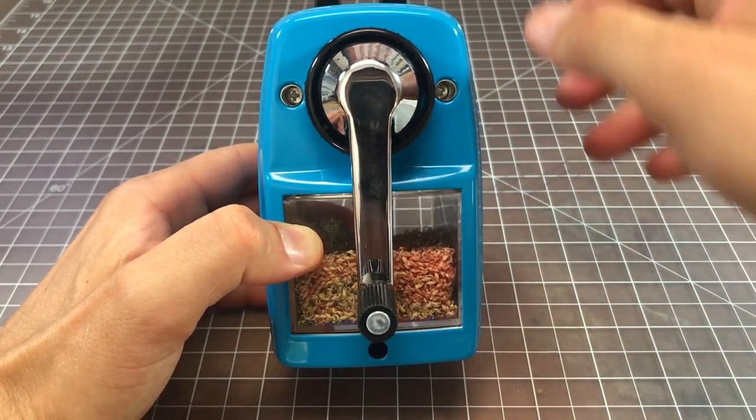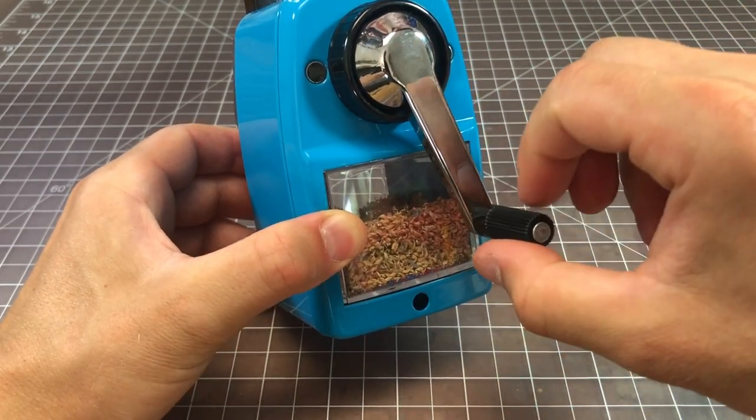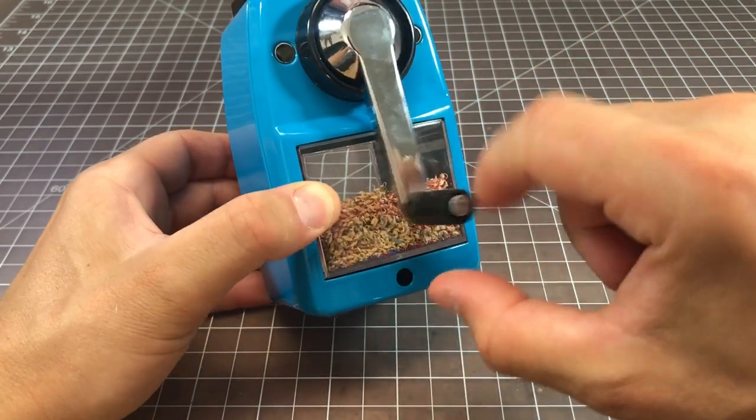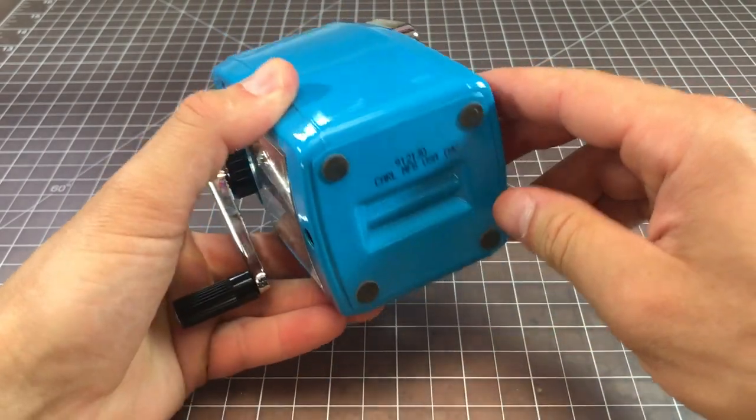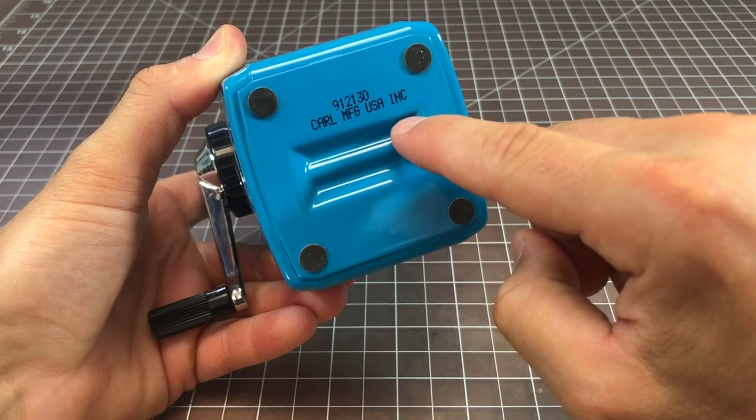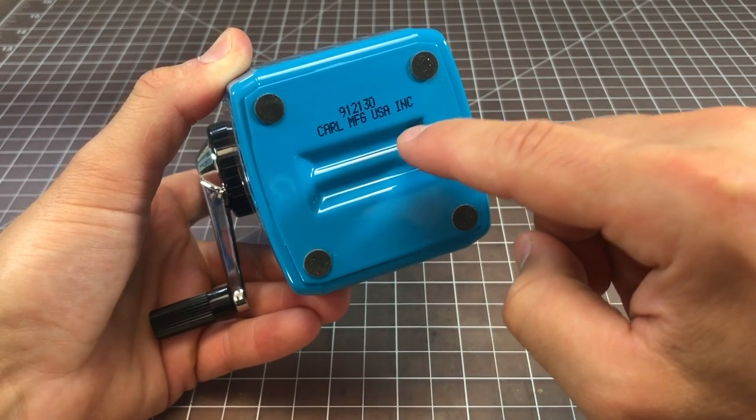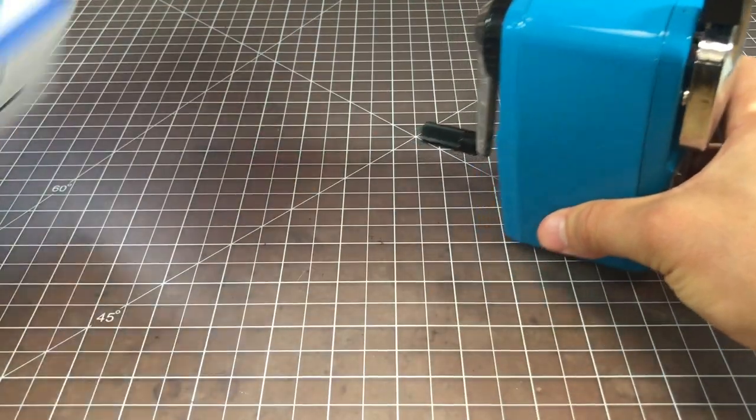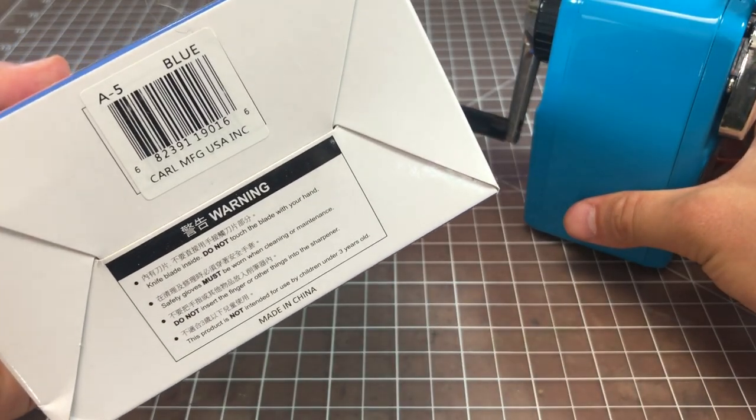Metal arm, plastic spinny deal, plastic container, and not too much else to it. It's Carl Manufacturing USA Inc. I thought it was made in the U.S. but it's actually made in China, and that is clear as per the packaging.